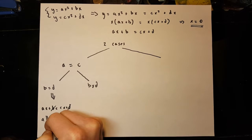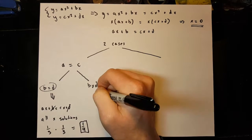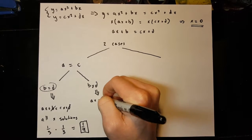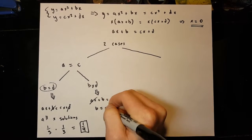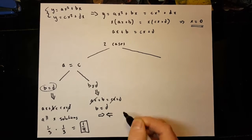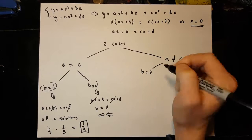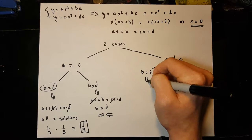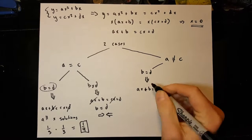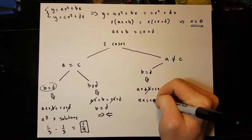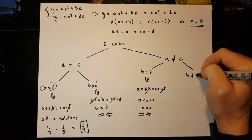Our other case is that a is not equal to c. One sub-case is that b equals d — if so, we could eliminate it from both sides, but then ax equals cx, and therefore a equals c, which is a contradiction. Our other case is that b is not equal to d. Since a is not equal to c and b is not equal to d, x can't be 0, because if x were 0, b would equal d, which contradicts our assumption. These two lines have to intersect at some point, so there is a unique x solution that is non-zero.